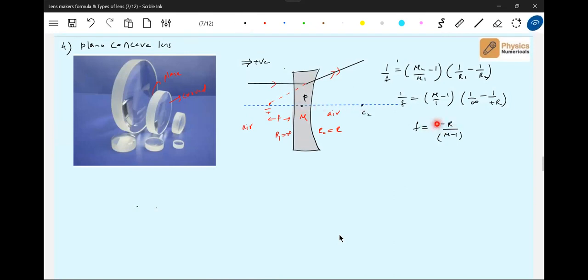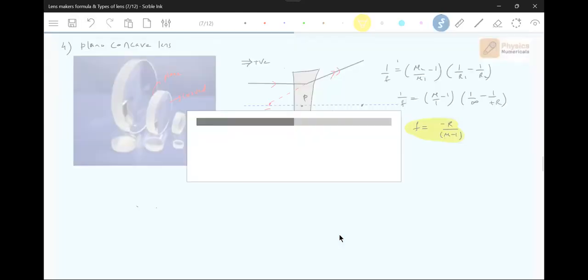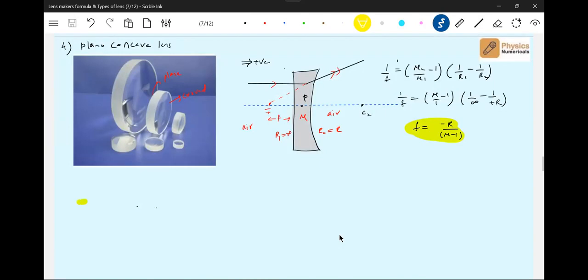Okay fine, so like this we will define the type of lens. So now we will go for next, the positive meniscus.